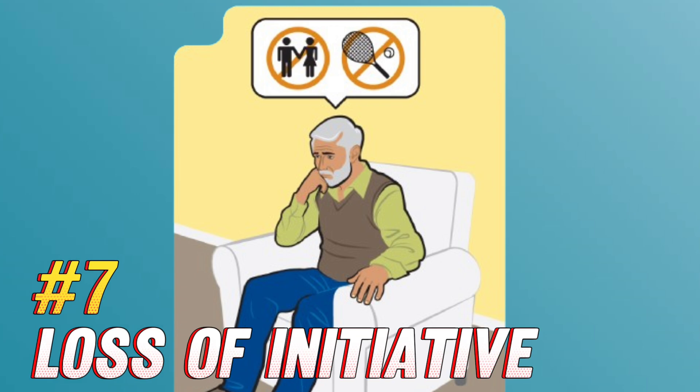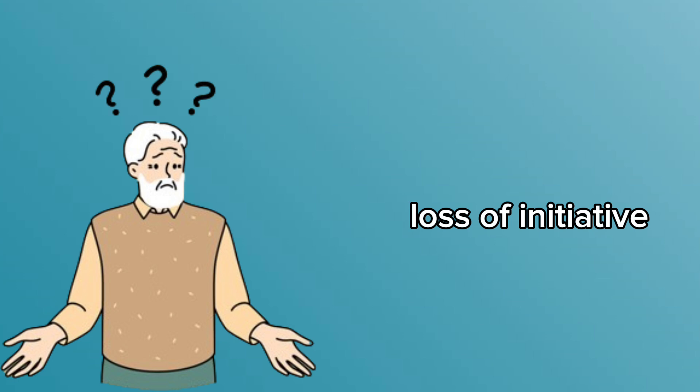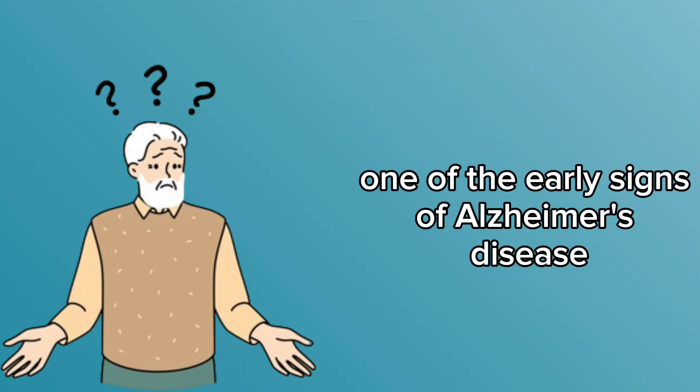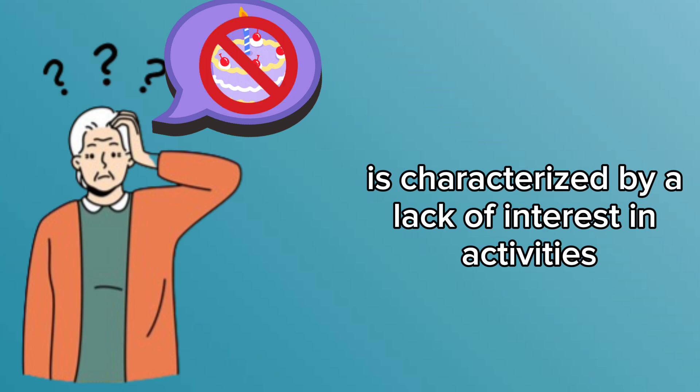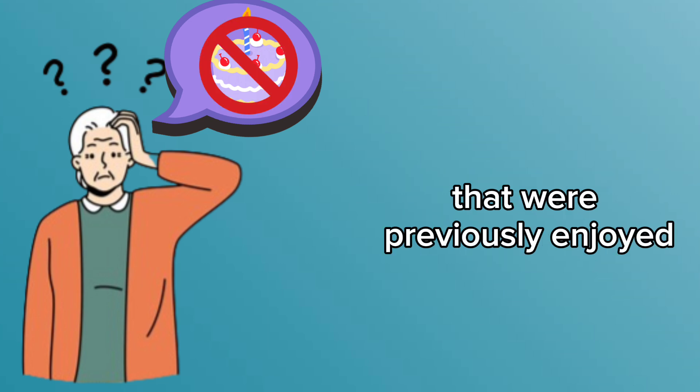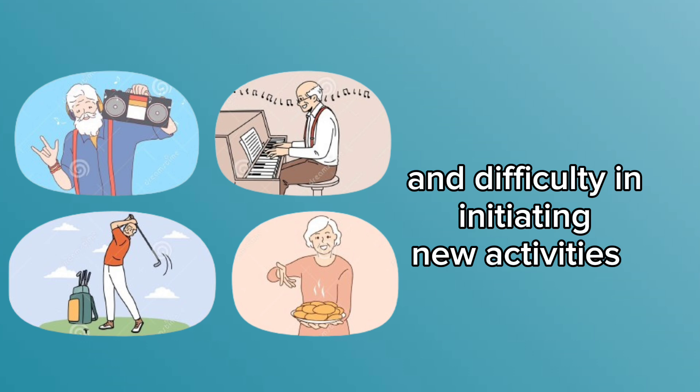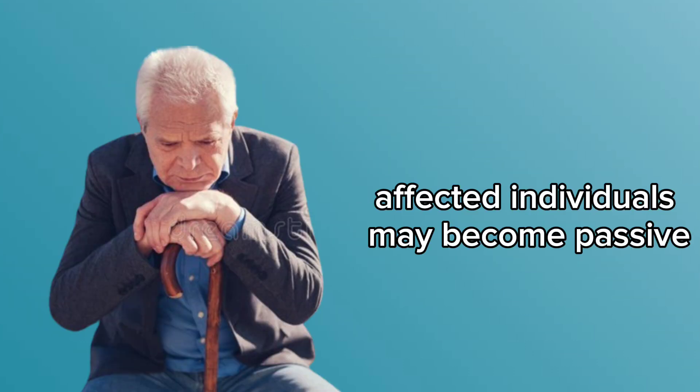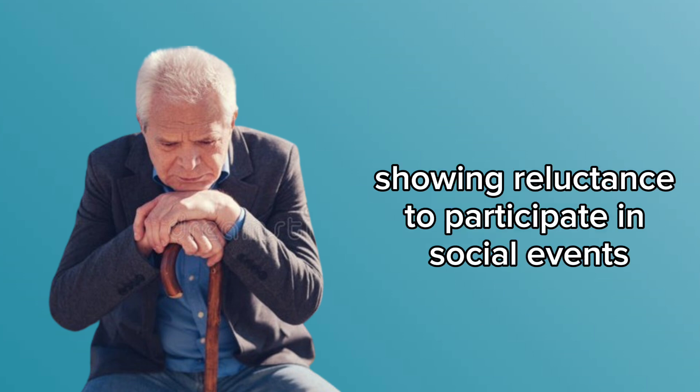Number seven: loss of initiative. Loss of initiative, one of the early signs of Alzheimer's disease, is characterized by a lack of interest in activities that were previously enjoyed and difficulty in initiating new activities. Affected individuals may become passive, showing reluctance to participate in social events, hobbies, or even daily tasks.